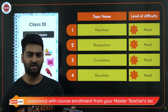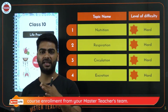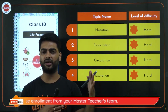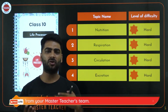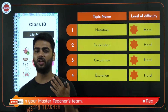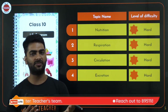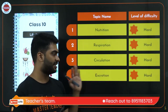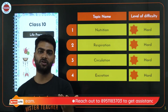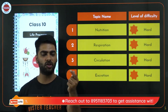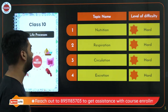Excretion covers kidneys, nephrons, ureters, urinary bladder, dialysis, the function and location of the kidney, and urine formation. It's a little hard, but if you keep reading your NCERT again and again, you will know it like the tip of your tongue.